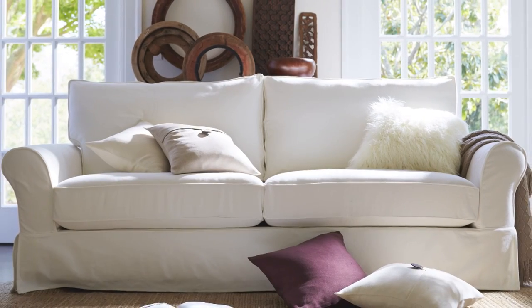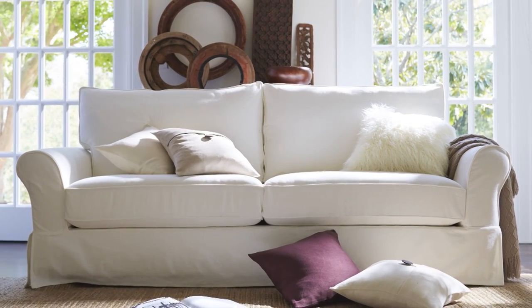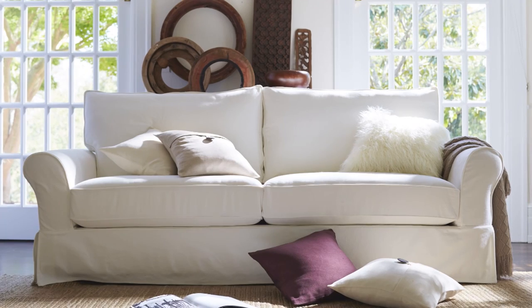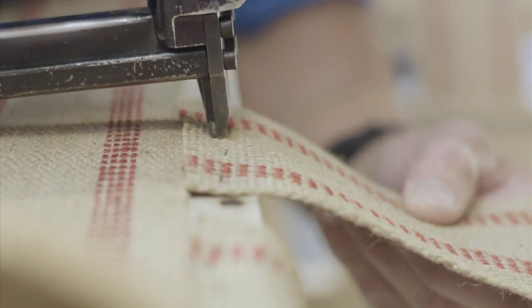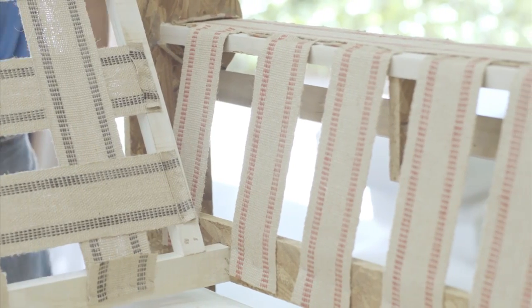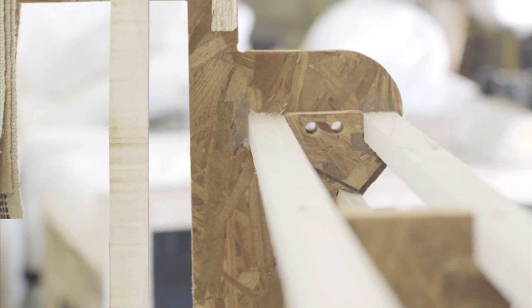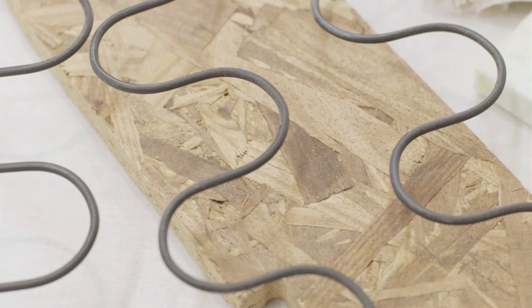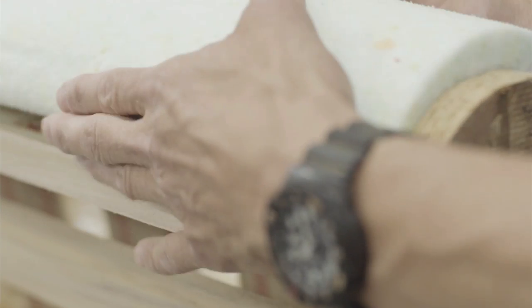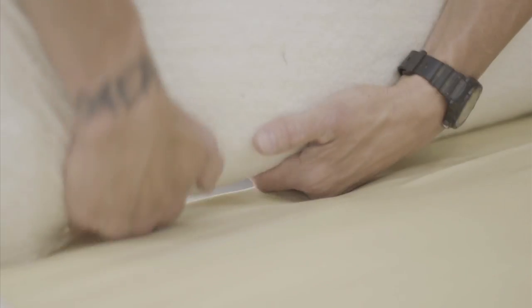Our new Pottery Barn Comfort Eco sofa took five years to develop and we're proud of it. Master artisans in our Hickory, North Carolina furniture studio use FSC certified wood, 100% recycled steel, organic cotton, recycled polyethylene, and natural latex.